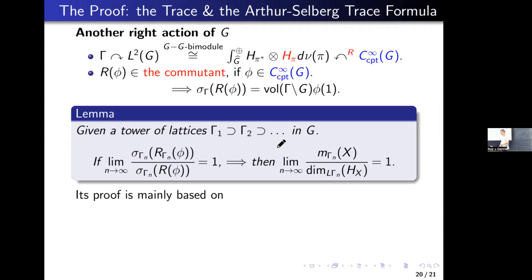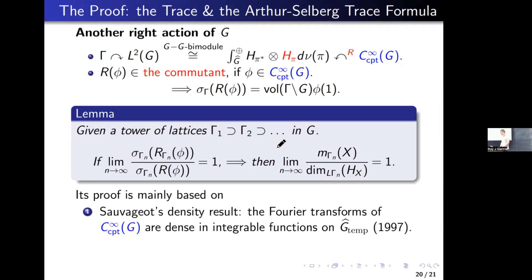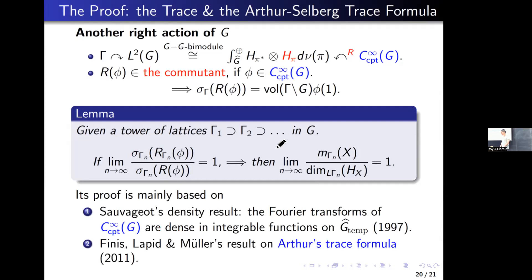Based on these two different actions of G and gamma, we can prove: given a tower of lattices gamma_1 ⊃ gamma_2 ⊃ ... in G, if the limit of the quasi-regular trace quotient by the regular trace has limit 1, then the limit multiplicity problem is true. So it suffices to prove this lemma. The proof of this lemma is based on two results: first, Salgo's density result, which says that the Fourier transforms of smooth functions with compact support are dense in integrable functions on the tempered dual (1997); and second, an extension of Arthur's trace formula by Finis, Lapid, and Müller in 2011.